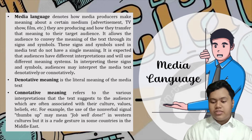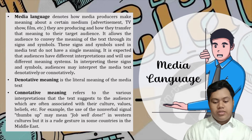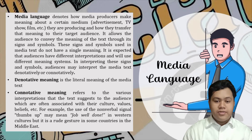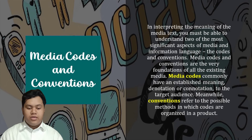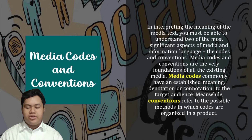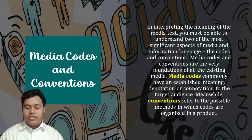Denotative meaning is the literal meaning of the media text, while connotative meaning refers to the various interpretations that the text suggests to the audience, which are often associated with their cultures, values, beliefs, and so on. In interpreting the meaning of the media text, you must be able to understand two of the most significant aspects of media information language: the codes and conventions.